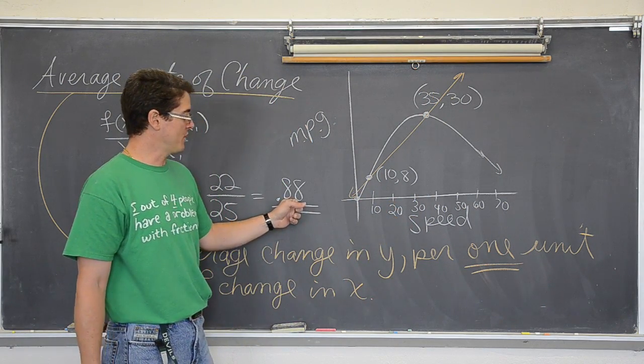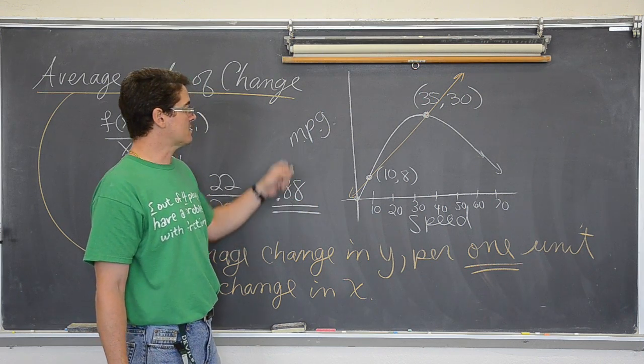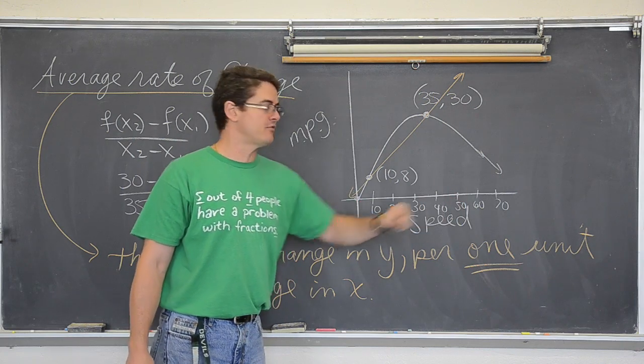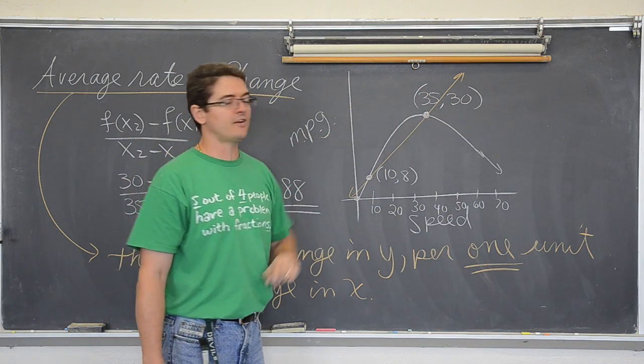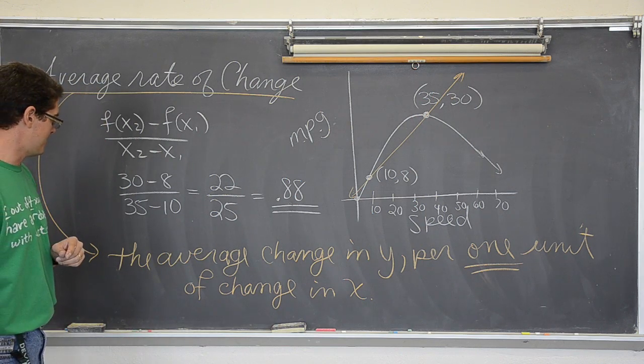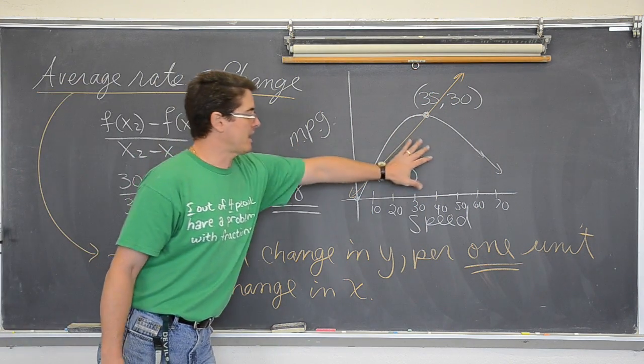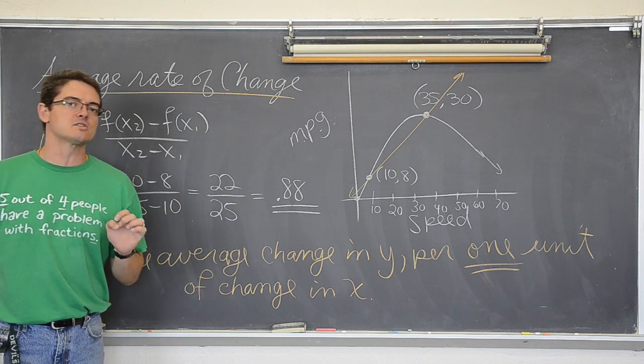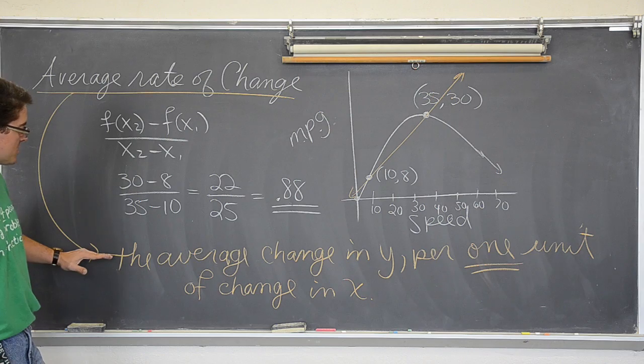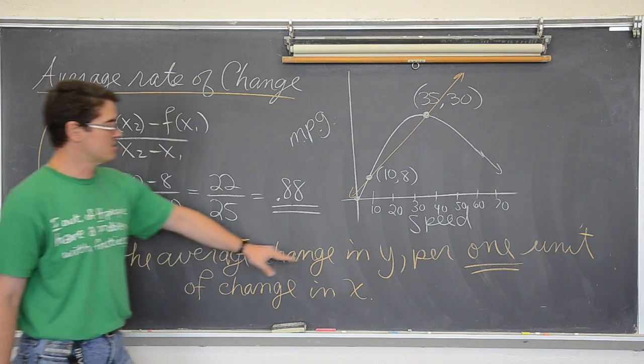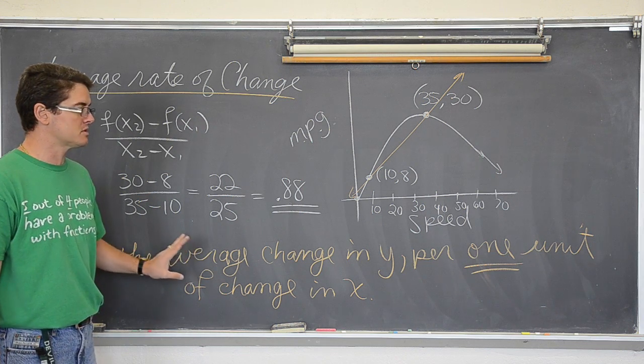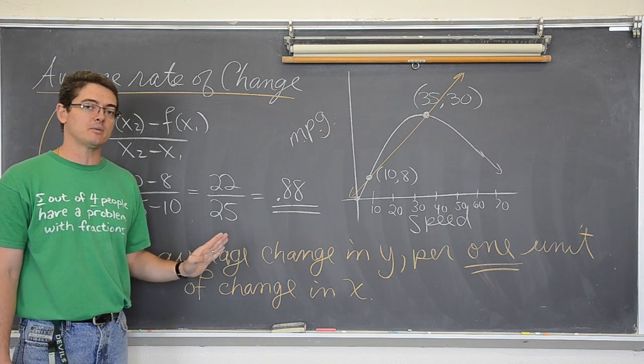My mileage will increase an average of .88 miles per gallon for every one mile an hour faster I drive between 10 and 35 miles an hour. So when you are dealing with word problems, when you are looking at these word problems and applications, you don't want to think of slope as being rise over run, or subtracting y's over subtracting x's. No, the real definition of slope is the average change in y per one unit of change in x. This is a very, very important definition of slope when you are dealing with real life applications.